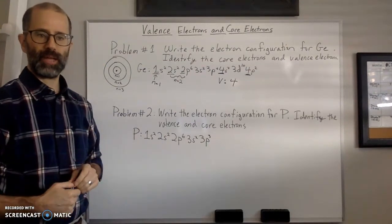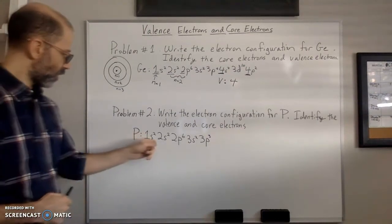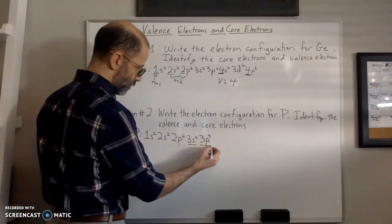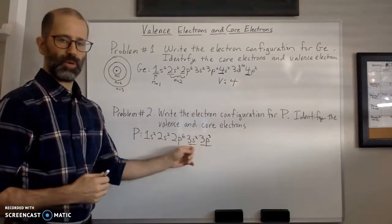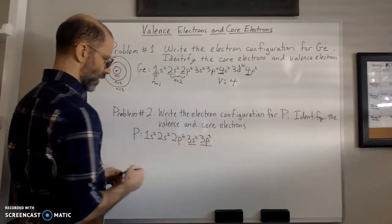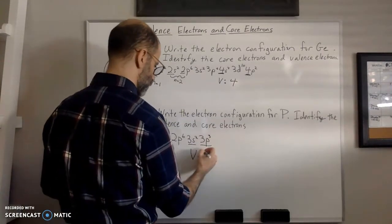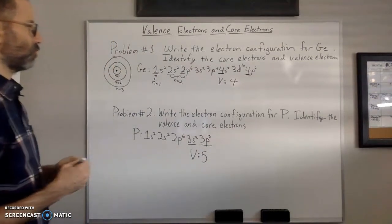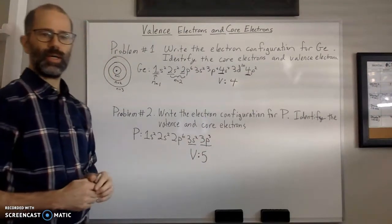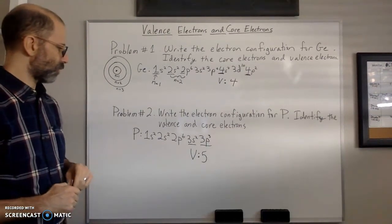We want to identify the core and valence electrons for phosphorus. The valence electrons are in the highest energy level. We have n=1, 2, and 3 — three is the highest. So the two sublevels at n=3 are where the valence electrons are: two electrons in 3s and three in 3p, giving us five valence electrons. The rest are core electrons.